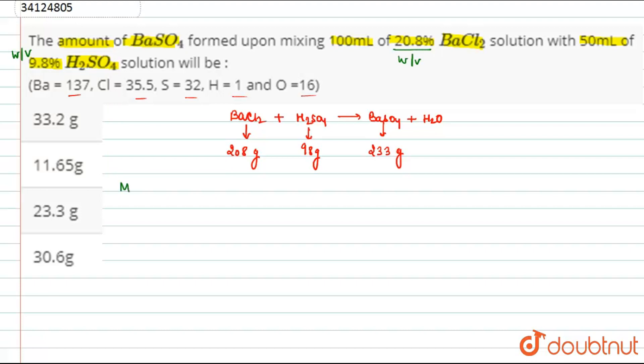So, mass of BaCl2 in solution. How much is this value? This is 100 into 20.8. This is 20.8 grams.